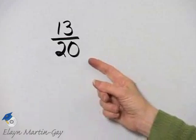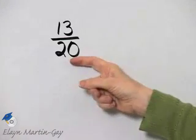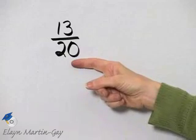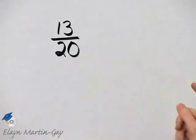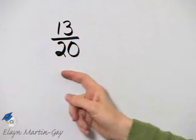I'd like to write this fraction as a decimal. Now, remember, it's easy to write a fraction as a decimal if the denominator is 10, 100, 1000, or so on.